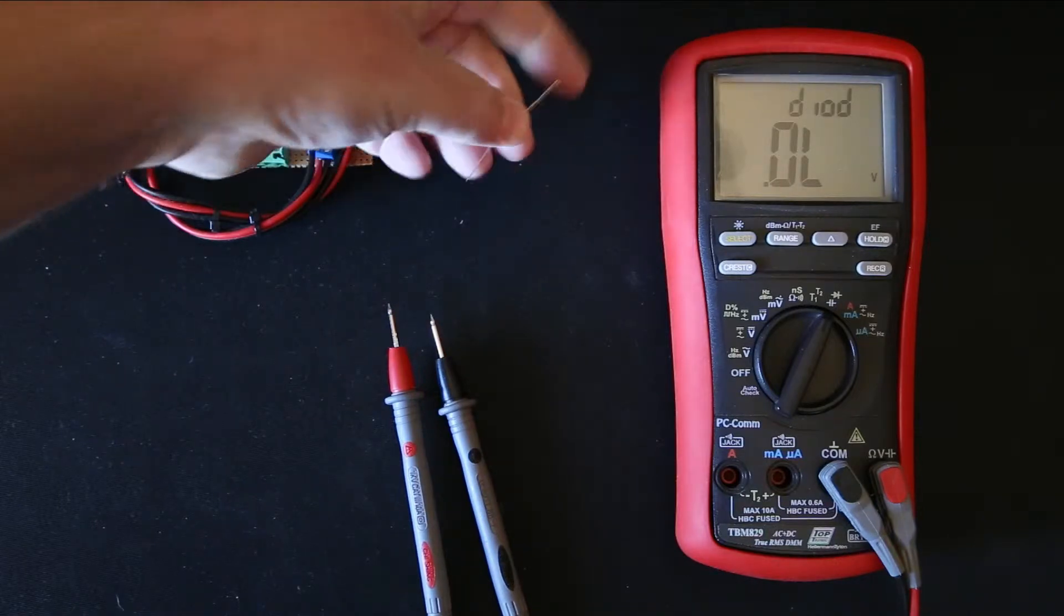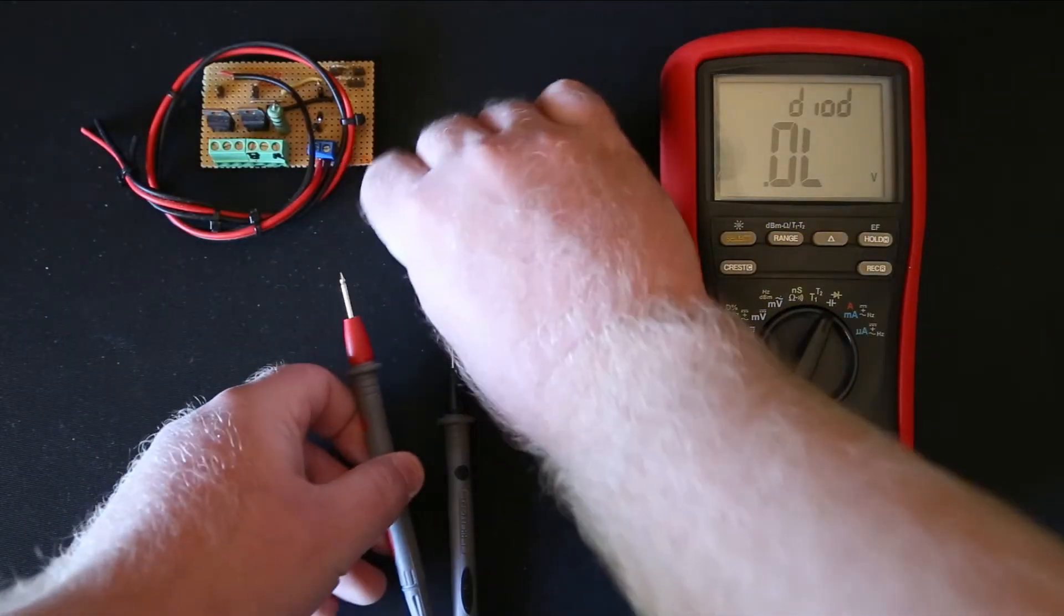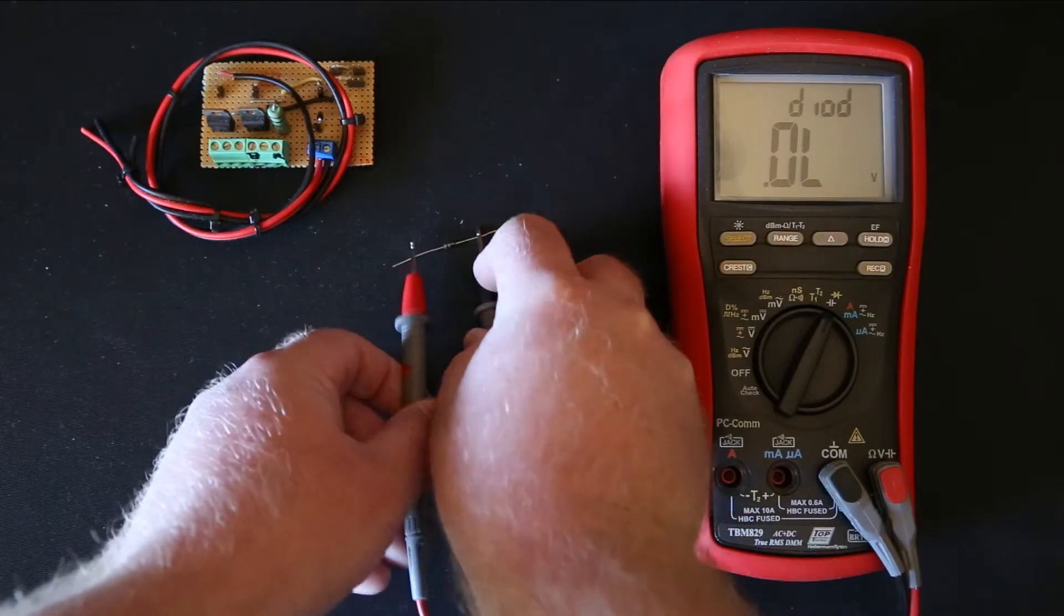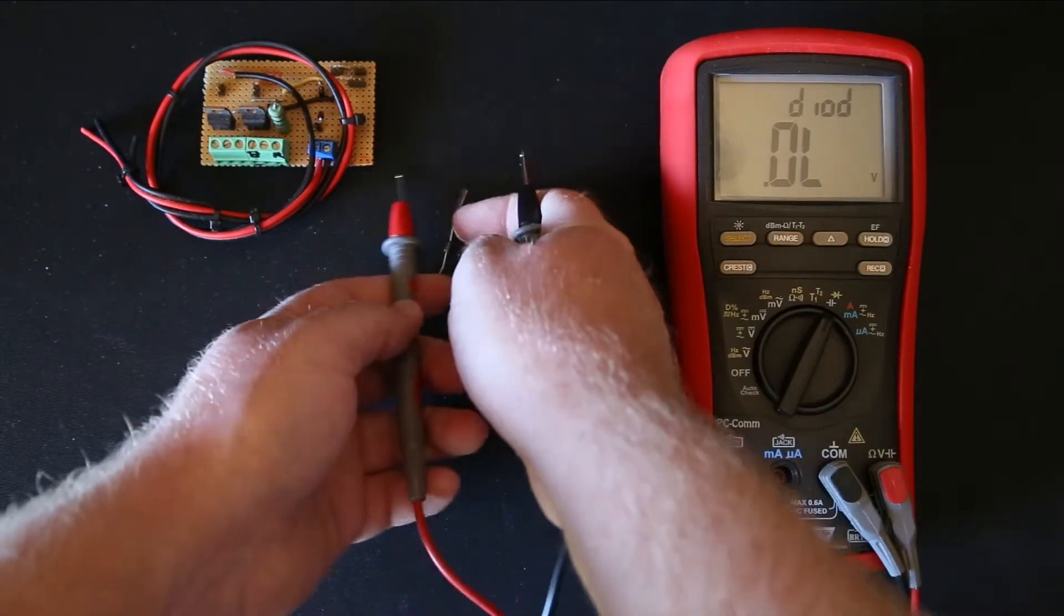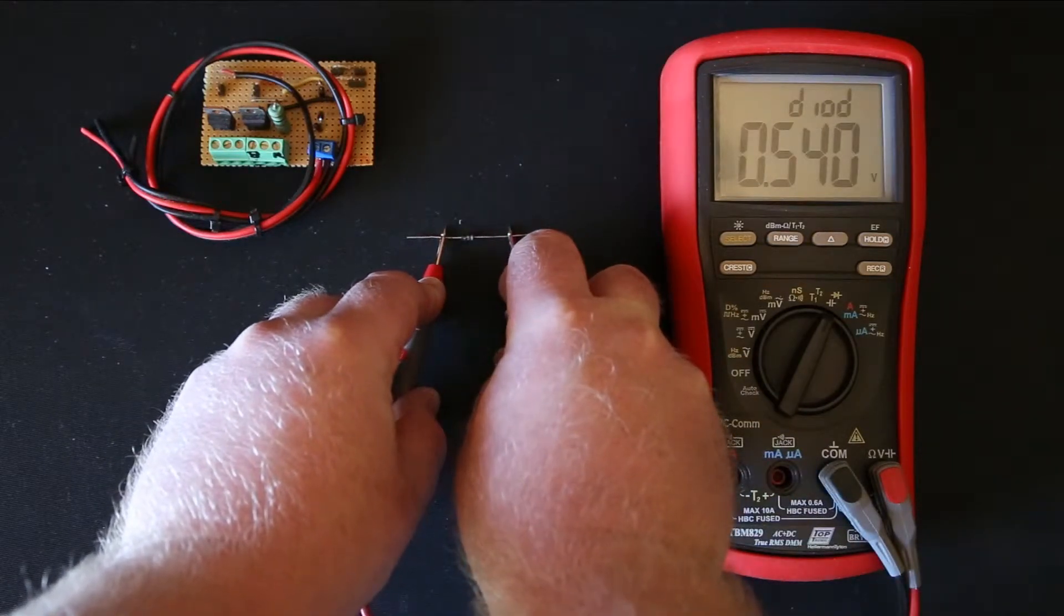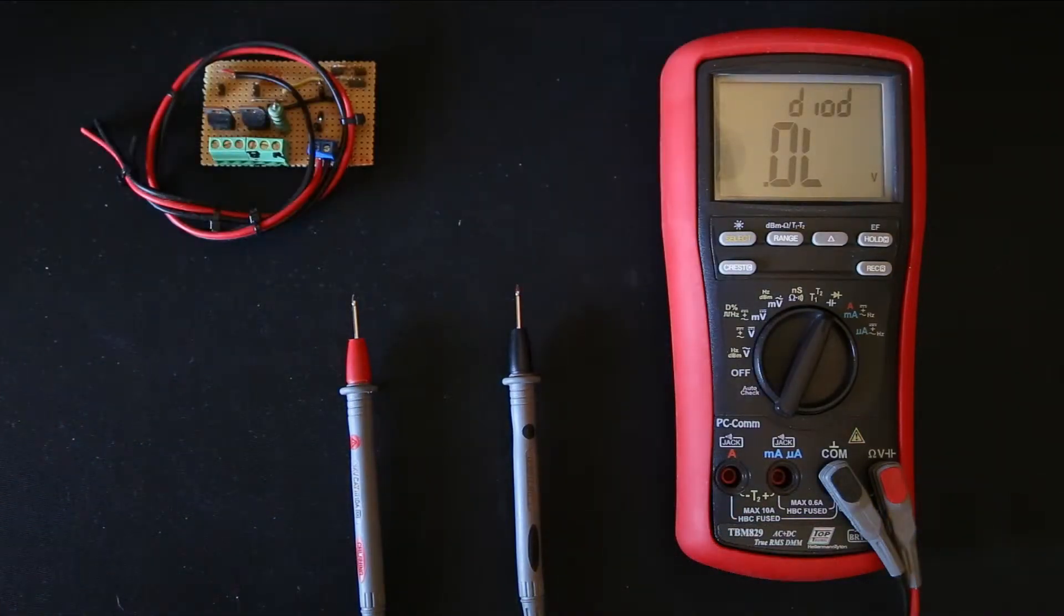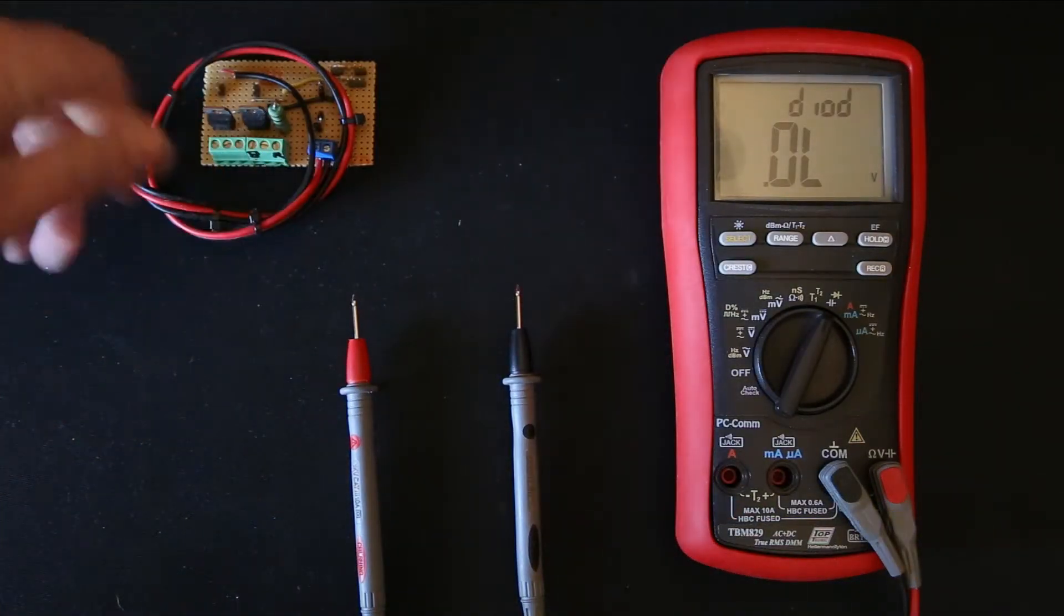Now a small silicon diode, same thing applies. Let's start with the way where it won't allow power to flow. Nothing. Turn it around. 0.54. This diode is good, silicon. As you can see, that is a good way of doing things with a diode test.